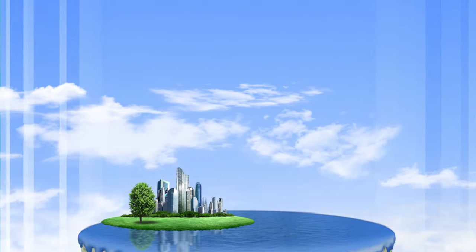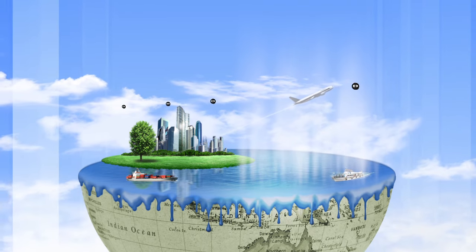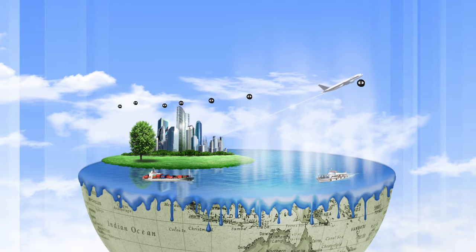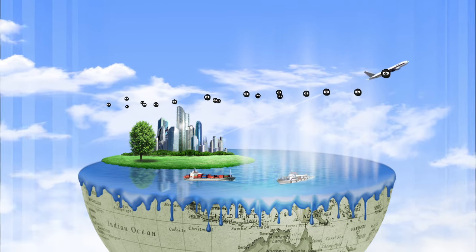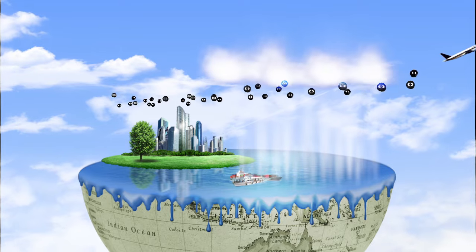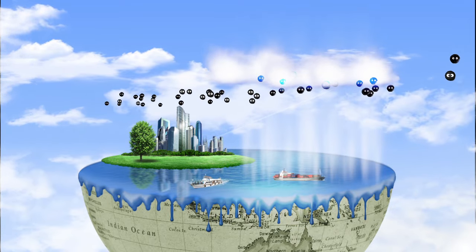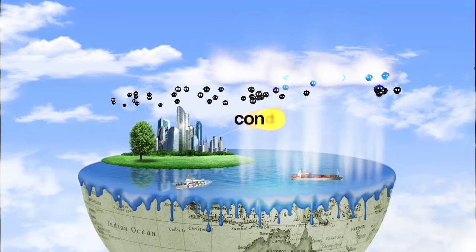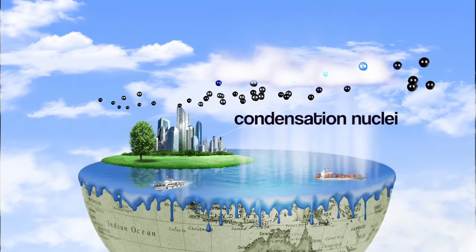However, the water vapor must condense onto something. Dust, pollen, smoke, or sea salt particles must be present in the air for condensation to occur. These are called condensation nuclei.